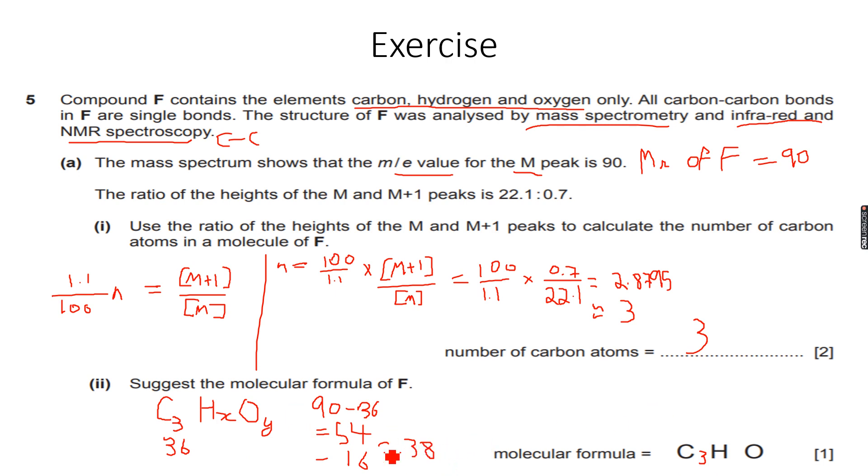Each hydrogen atom has a mass of one atomic mass unit, so I cannot say there are 38 hydrogens. I'll subtract another oxygen.